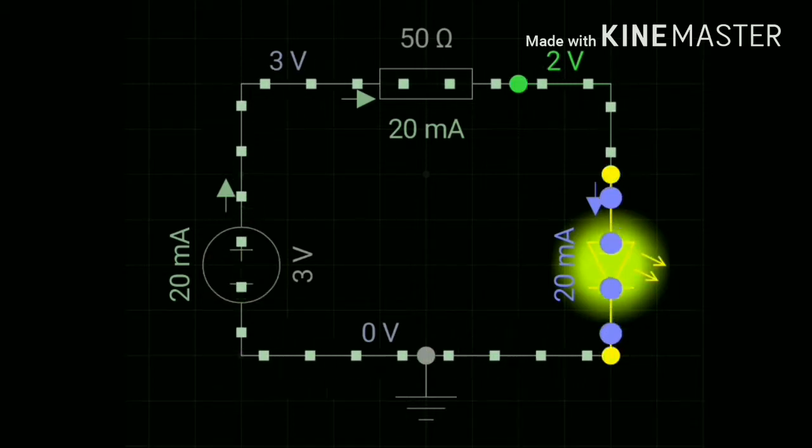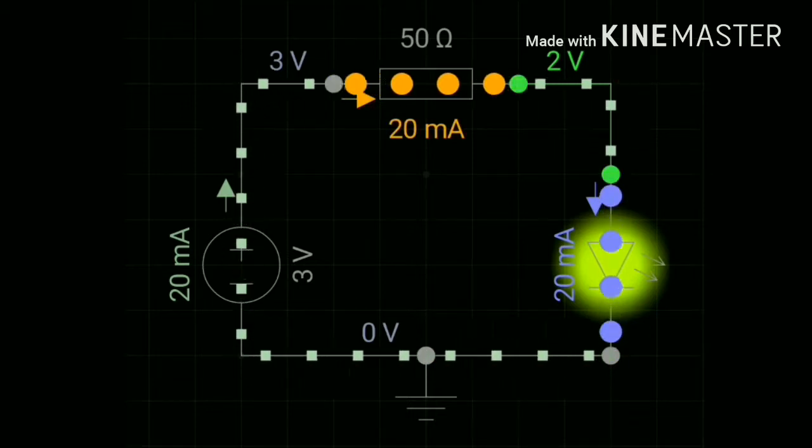LEDs have recommended operating voltage and current, based on which you can calculate the resistance using Kirchhoff's laws. Every circuit makes it super easy to find the right resistance value.